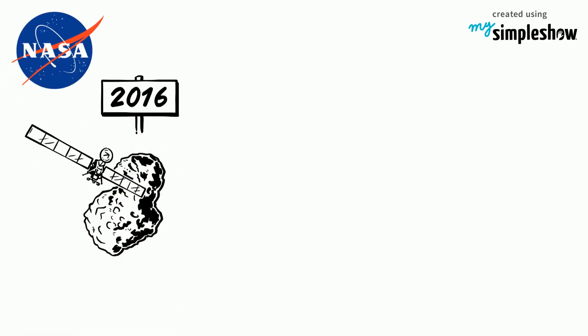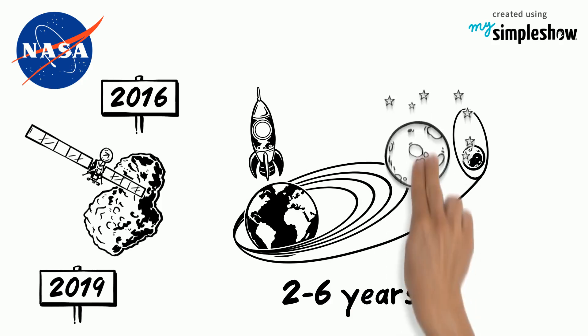NASA's goal is to find the suitable asteroid by 2016 and to capture it in 2019. It will take a further 2 to 6 years to place the asteroid in a stable orbit around the moon.